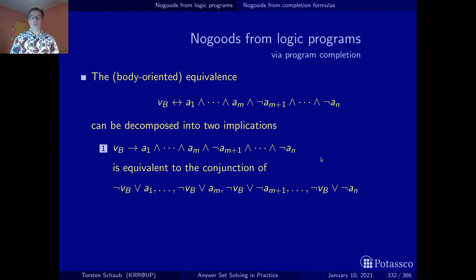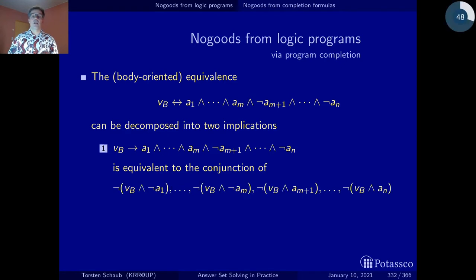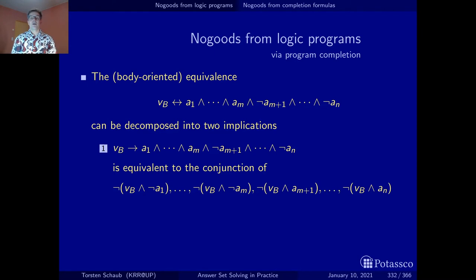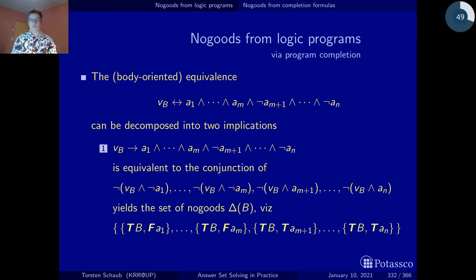Perhaps this doesn't immediately show the bridge to no-goods, but we can double-negate both of them with an application of De Morgan's law. So all of them are equivalent to saying it can't be the case that the body is true and a positive body literal is false, or it can't be the case that the body is true and a negative body literal is false because the underlying atom is true. And now this cries out to be translated into no-goods, because it's just the same condition formulated in terms of no-goods.